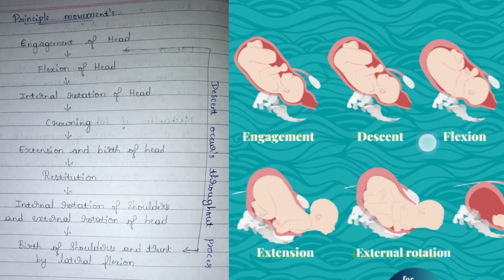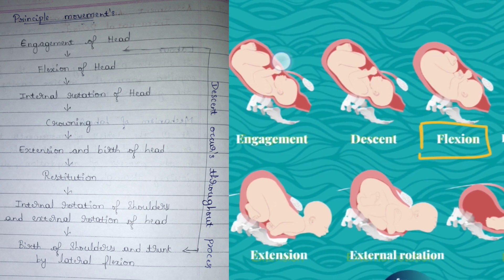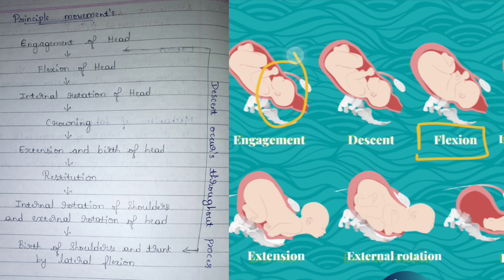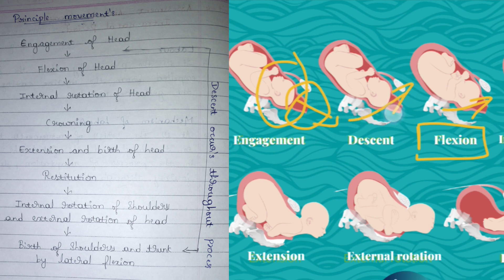Next is flexion of the head. As you can see here, the baby's head is in a normal position, but then the baby's head moves forward a bit. This is because as the baby goes downwards, the passage gets smaller. As the passage gets smaller, the baby's head bends forward, and that is known as flexion of the head.